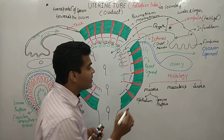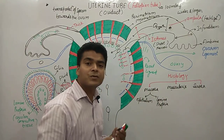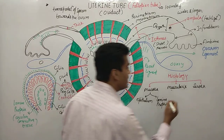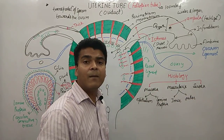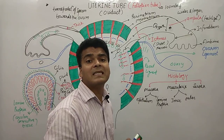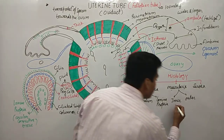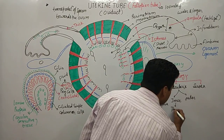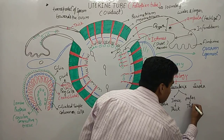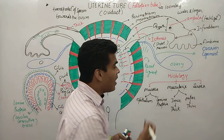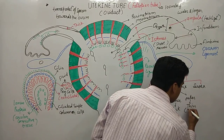The next structure is the muscularis, which is also divided into two portions: inner layer and outer layer. In both layers you will find smooth muscle cells. The inner portion is thick and the outer portion is thin.